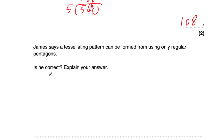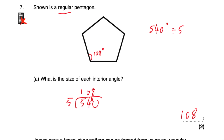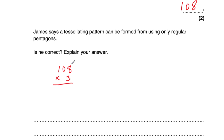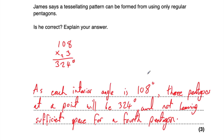James says a tessellating pattern can be formed from only using regular pentagons - is he correct? Regular pentagons do not tessellate. If we put three of them together, three times 108 is 324 degrees, which is less than 360, so there's a gap - but a fourth pentagon won't fit in either because they would overlap. So as each interior angle is 108 degrees, three pentagons at a point give 324 degrees, not leaving sufficient space for a fourth pentagon. Therefore, regular pentagons will not tessellate.